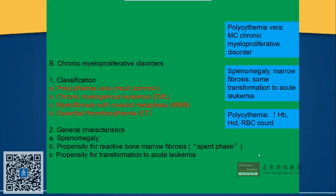We are now working on the chronic myeloproliferative disorders. The specific ones are Polycythemia Vera, chronic myelogenous leukemia, and myelofibrosis with myeloid metaplasia — abbreviated MMM. The last one we are going to discuss is essential thrombocytopenia.